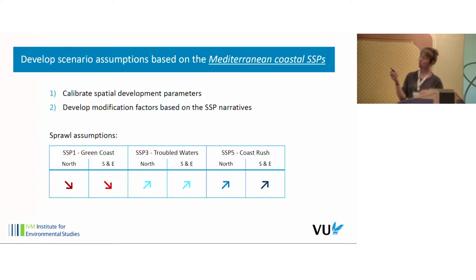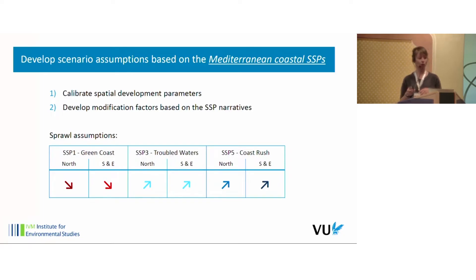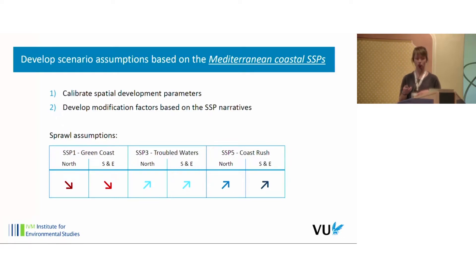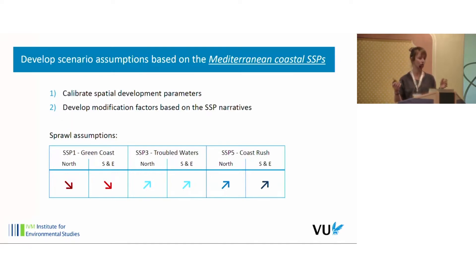Here you see the sprawl assumptions included in the model for three SSPs. Under SSP1 — which we call green coast — we assume that sprawl decreases relative to historically observed sprawl, especially in the northern parts of the region but also in the south and east. Under SSP3 — troubled waters — we assume sprawl increases a bit, mainly because it is not a well-managed scenario with hardly any management of sprawl. Under SSP5 — coast rush — we assume high sprawl both in the north and in the south and east, because it is a very rich scenario with lots of urban sprawl assumed.